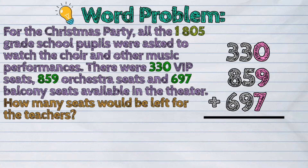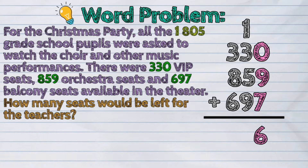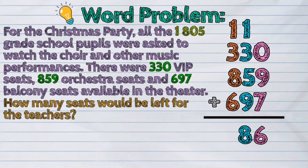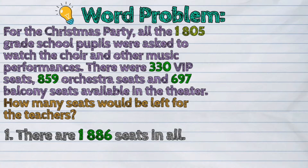The sum in the ones place is 16. We will regroup this number by putting 6 in the ones place and carrying 1 to the tens place. The sum in the tens place is 18. We do the same process of regrouping — put digit 8 in the tens place and carry 1 to the hundreds place. The sum in the hundreds place is 18. So, there are 1,886 seats in all.